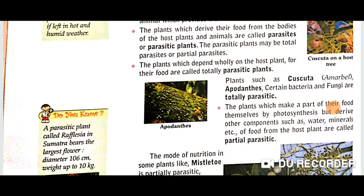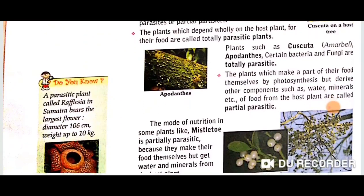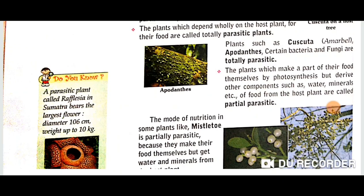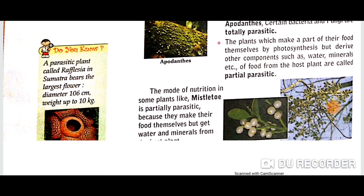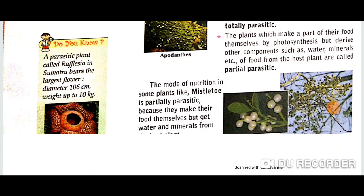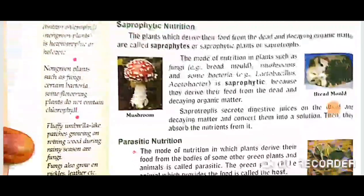The plant which makes part of its food itself through the photosynthesis process is called partially parasitic. Some of the food they make themselves, but for some components like water and minerals, they depend on other plants. An example of a partial parasitic plant is mistletoe. This is the second type of heterotrophic nutrition — parasitic nutrition.